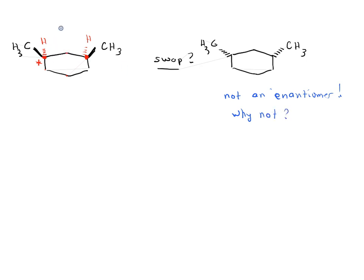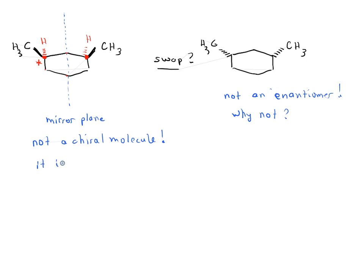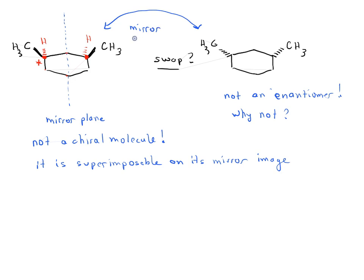If you look closely at the molecule on the left, one thing should stand out: this molecule has a mirror plane. The part of the molecule on the left is the exact mirror image of the part on the right. So it is actually not a chiral molecule — it is superimposable on its mirror image. The molecule on the right is the mirror image, but because this molecule has a mirror plane, these two molecules are actually the same molecule.